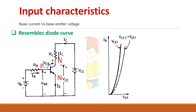The curve is drawn between base current and base-emitter voltage for different collector-emitter voltages. If VCE2 is greater than VCE1, the base current requirement may decrease. For a particular base-emitter voltage, if the collector-emitter voltage is higher, you may need a lesser base current. That is the input characteristics.